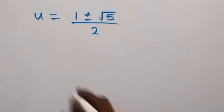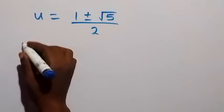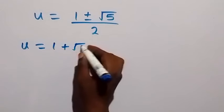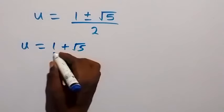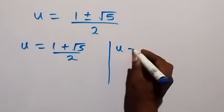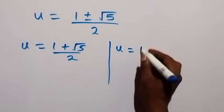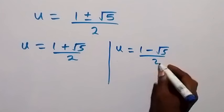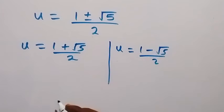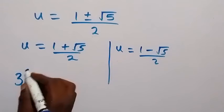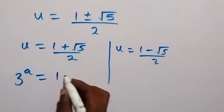The first value is u equals 1 plus root 5 over 2. Recalling that u is 3 raised to power a, we have 3 raised to power a equals 1 plus root 5 over 2.